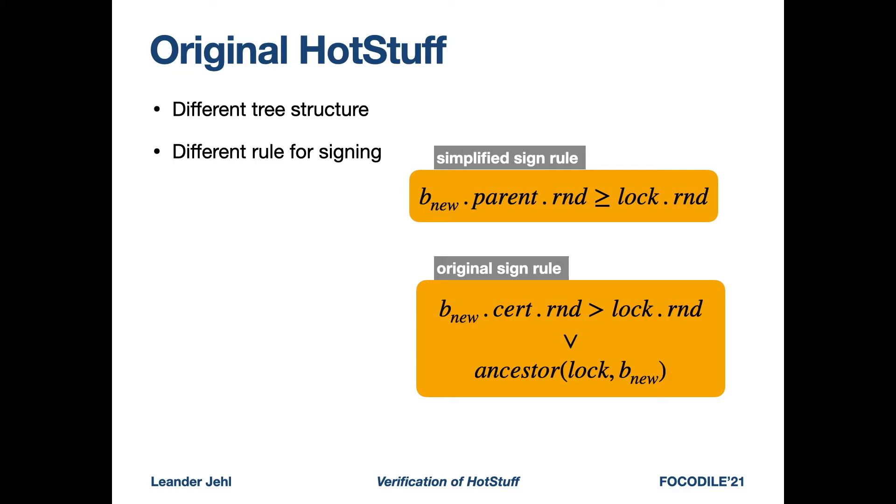The main difference is that HotStuff uses a different rule for signing. Remember that simplified HotStuff uses the upper rule right here, which compares the round of the parent of the new block with the round of the lock. The original rule also compares the round of the lock to the round of the block that is certified by the new block. However, additionally, for the original rule, a process has to check if the locked block is an ancestor of the new block.